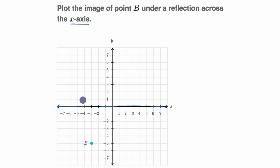So to go from B to the x-axis, it's exactly five units below the x-axis. One, two, three, four, five. So if we were to reflect across the x-axis, essentially create its mirror image, it's going to be five units above the x-axis. One, two, three, four, five.